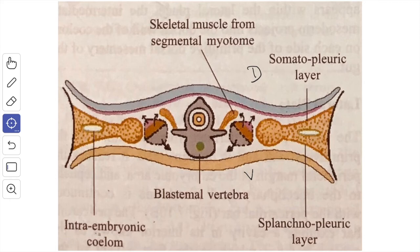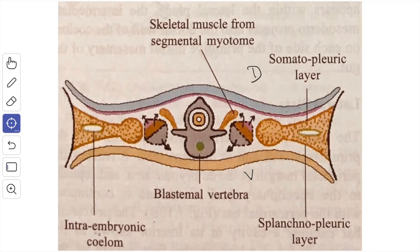Next we will see about the intermediate mesoderm. It connects the paraxial mesoderm with the lateral plate and gives rise to the development of the kidneys and the sex glands. In the cervical and upper thoracic region the intermediate mesoderm shows signs of segmentation, but more caudally it forms an unsegmented column of cells known as the nephrogenic cord. When the intraembryonic coelom appears within the lateral plate, the intermediate mesoderm projects into the dorsal wall of the coelom on each side of the primitive dorsal mesentery of the gut.